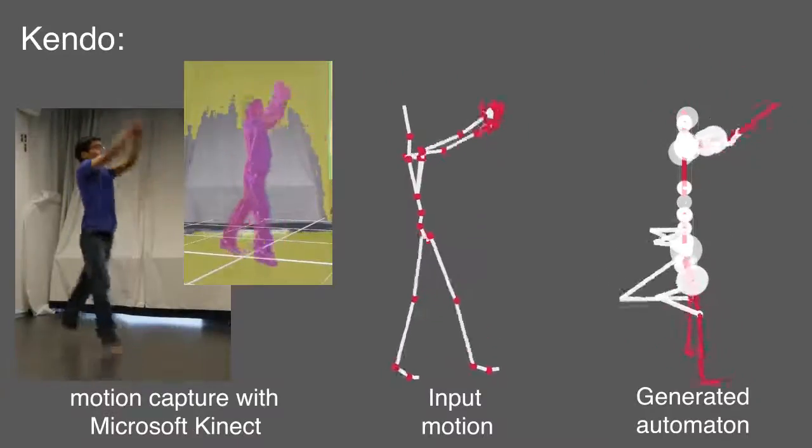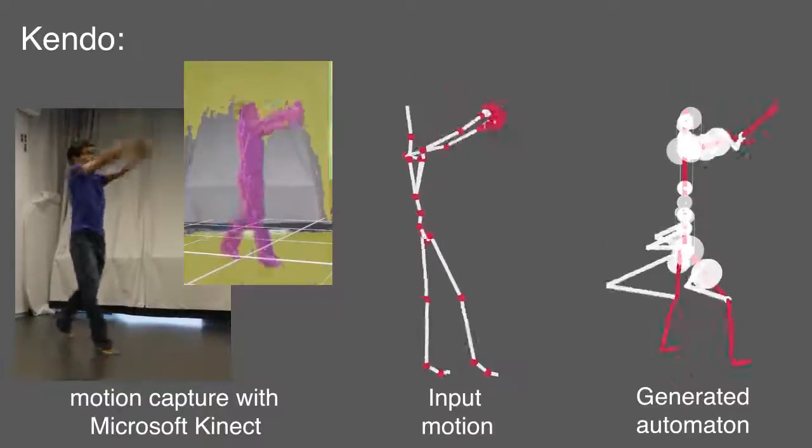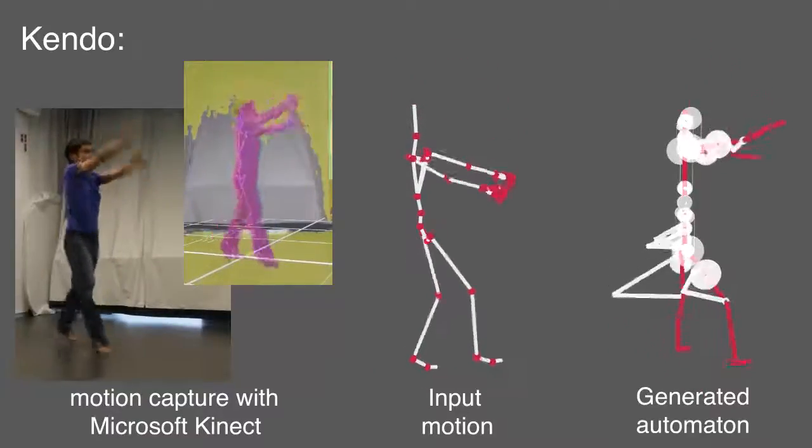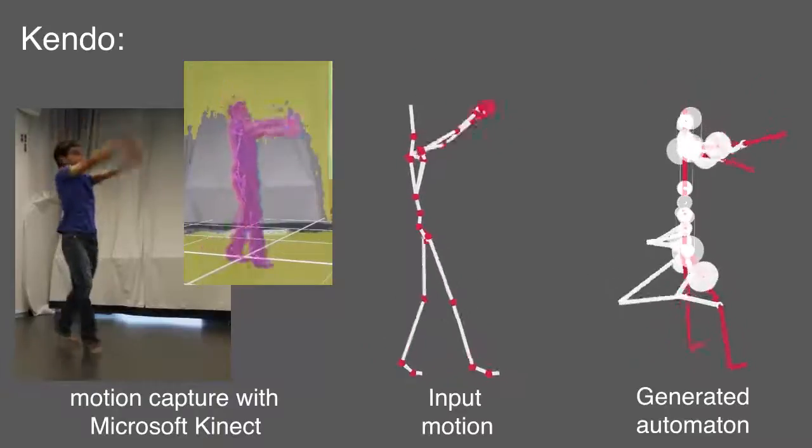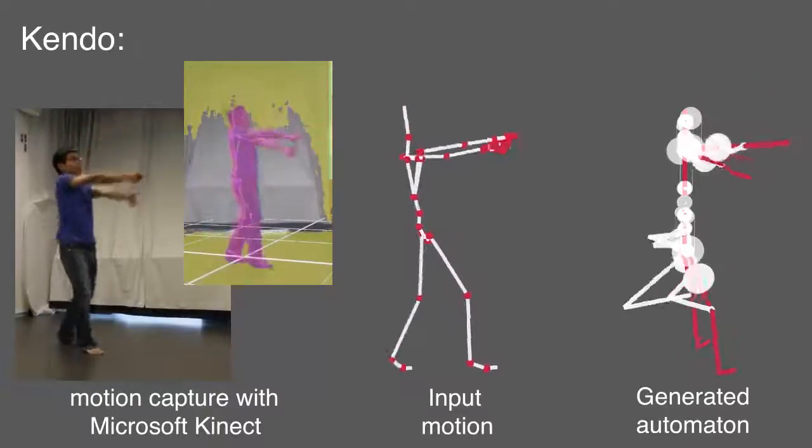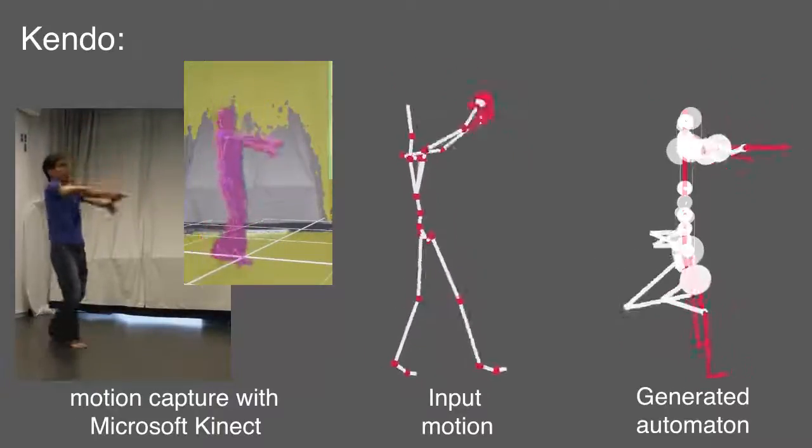While the input motion to our system can be selected from motion capture databases, commercial motion sensing input devices such as the Microsoft Kinect enable the users to directly perform the desired motion as shown in this kendo sequence.